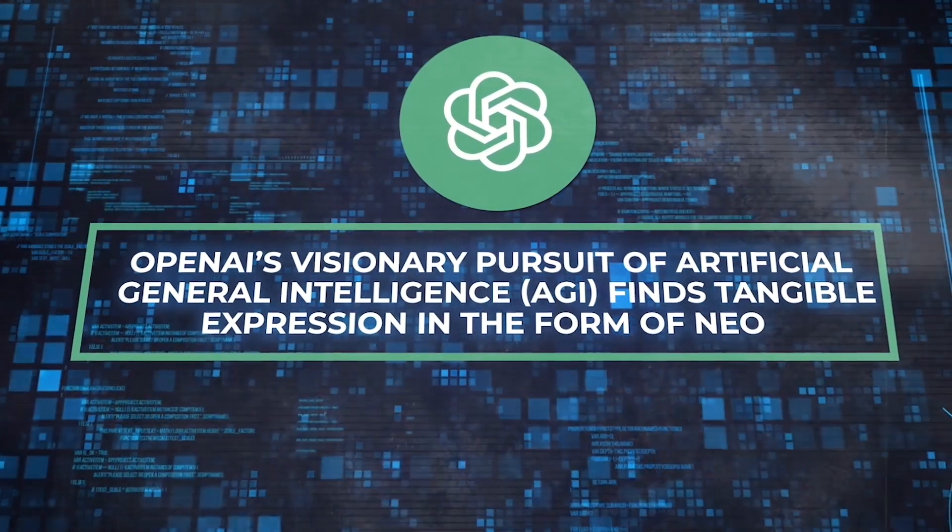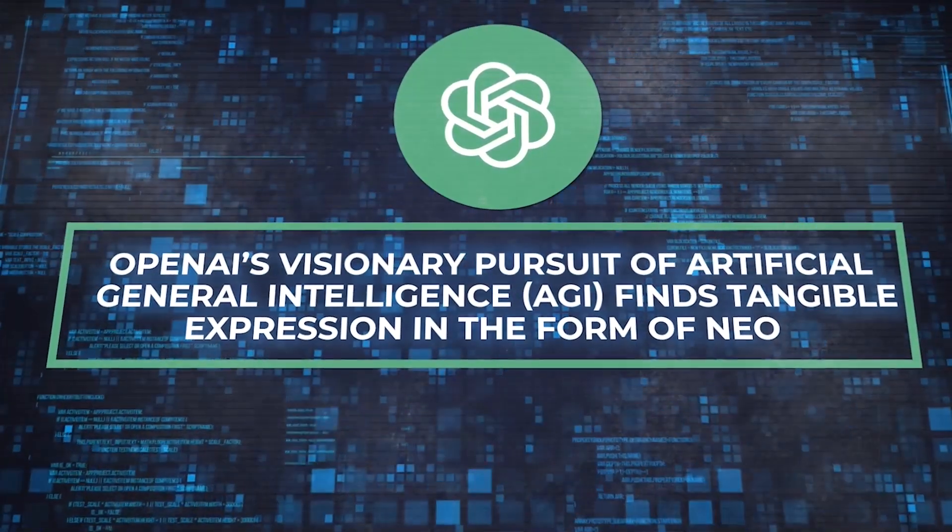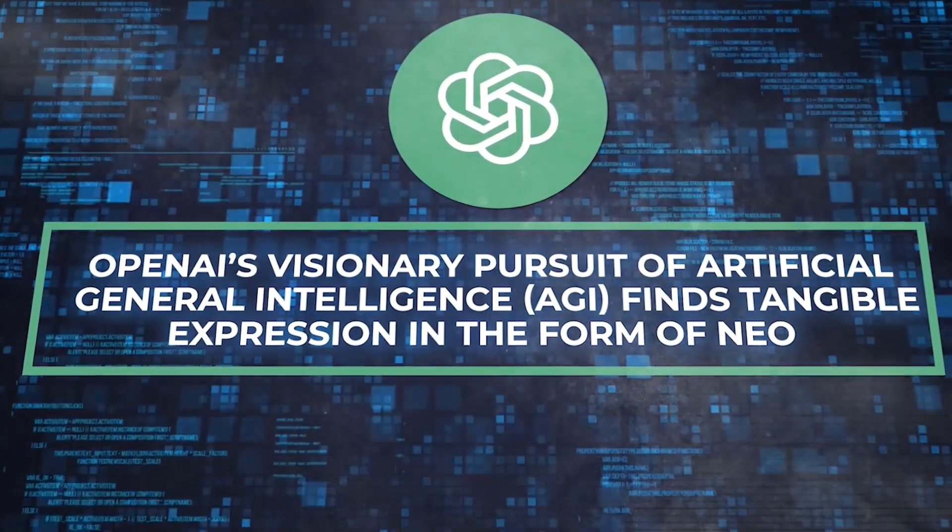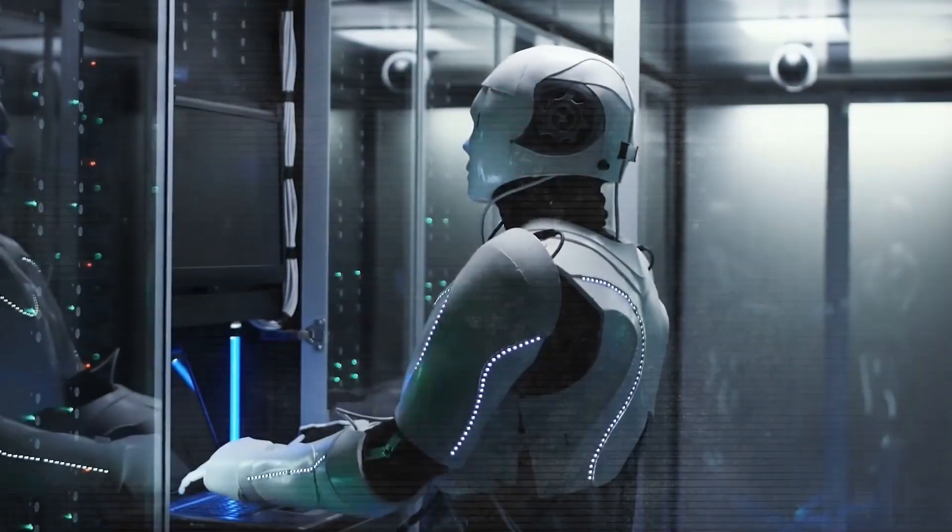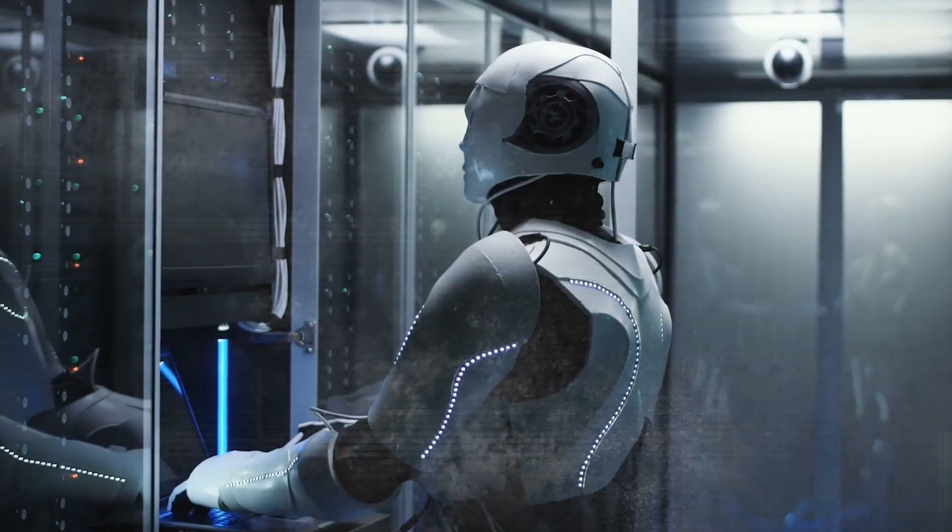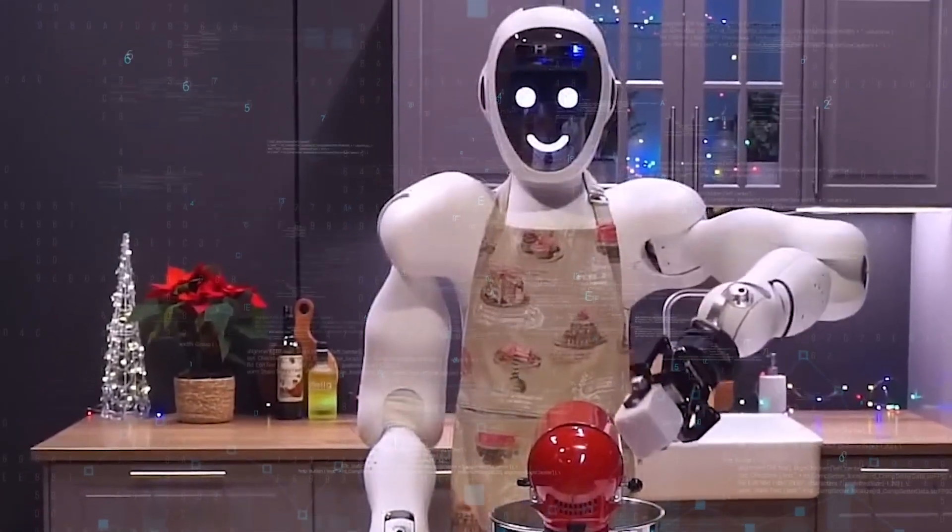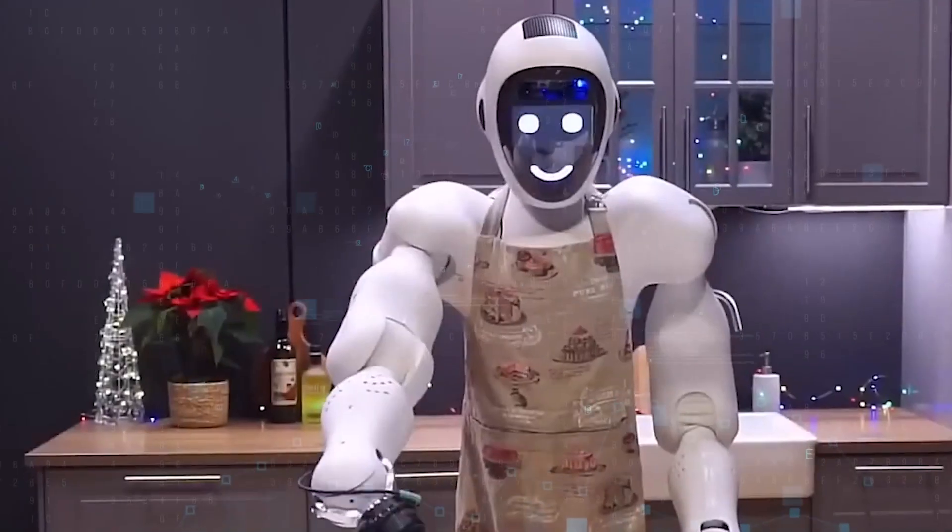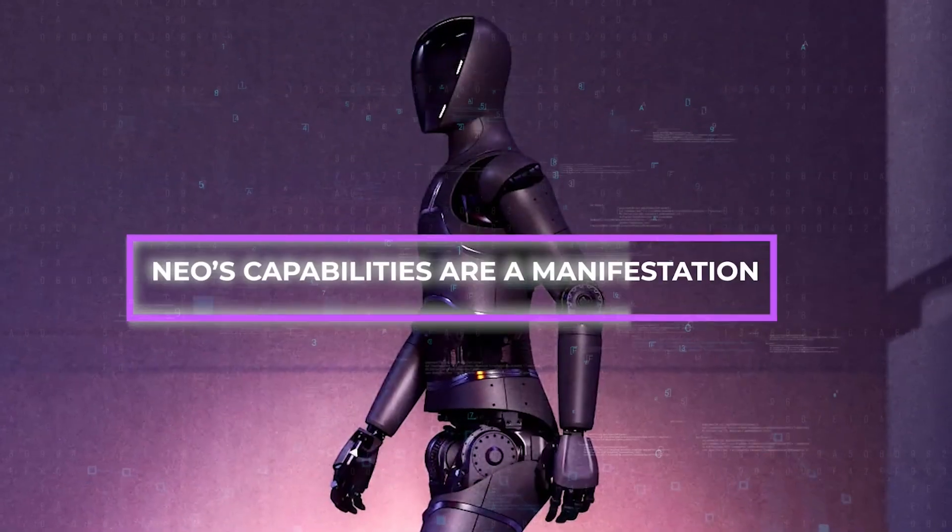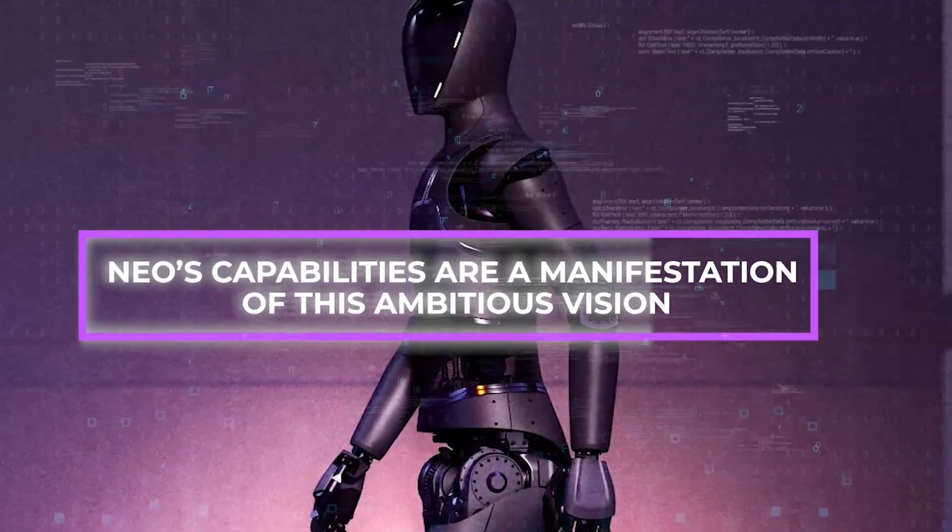It will be intriguing to observe how well it is implemented and what impact it has on various sectors and our daily life. OpenAI's visionary pursuit of artificial general intelligence, or AGI, finds tangible expression in the form of NEO, a groundbreaking creation that showcases the convergence of AI and robotics. NEO stands as a testament to OpenAI's mission to develop machines capable of comprehending and executing a vast spectrum of tasks that mirror human intelligence.